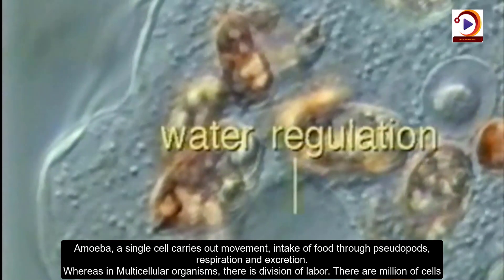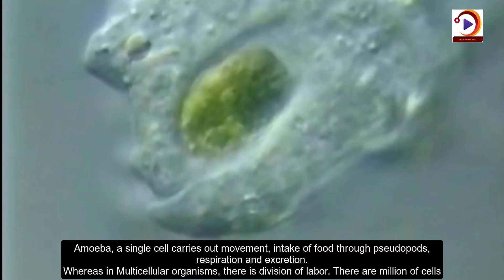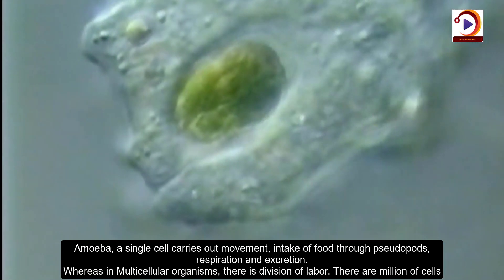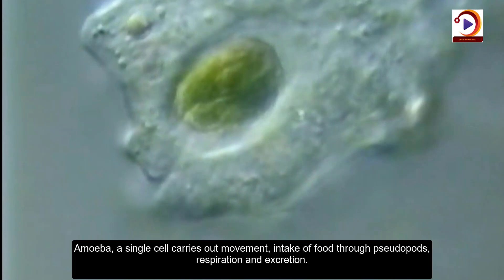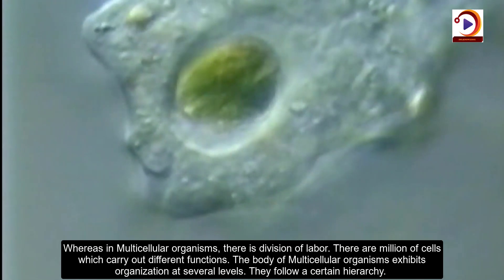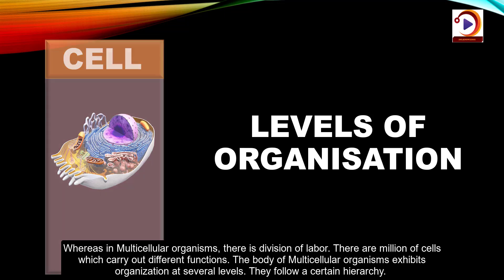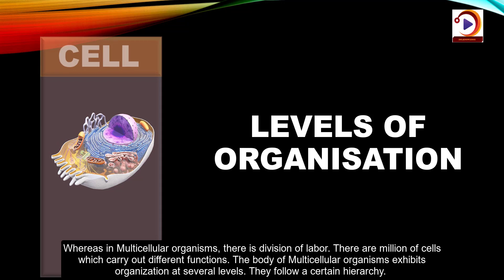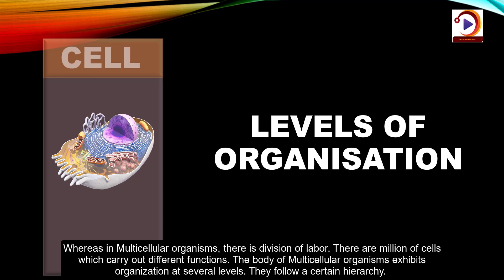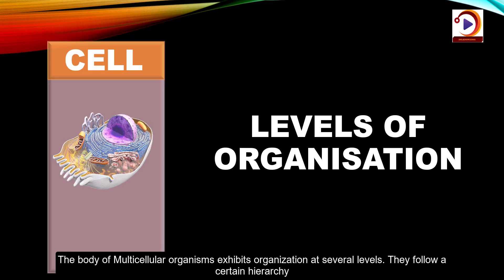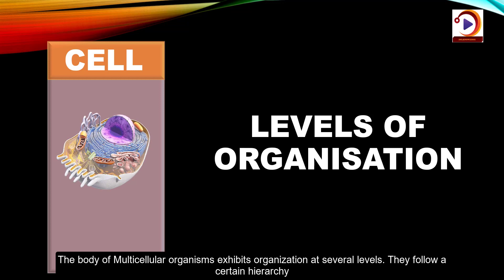As all the processes are performed by the single cell, they do not require a complex structure. Whereas in multicellular organisms, there is division of labour — the work is divided among various types of cells to perform different types of functions. There are millions of cells which carry out different functions, and the body of multicellular organisms exhibits organization at several levels.